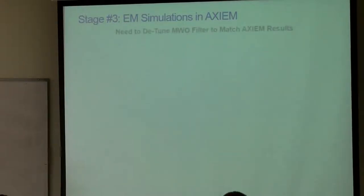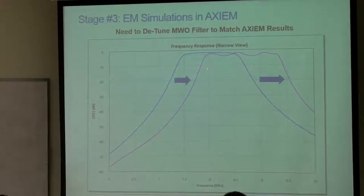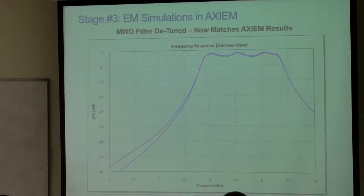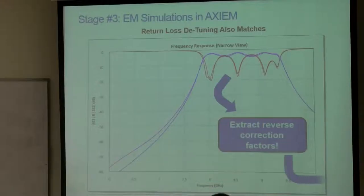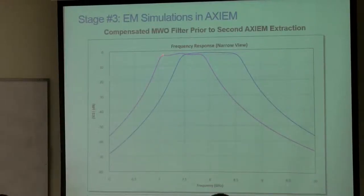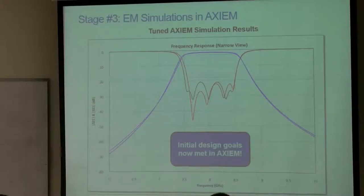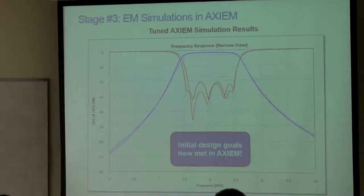Here's what the reverse correction method looks like graphically. I show Microwave Office and the bad Axiom EM result, intentionally match them up by messing with dimensions, and confirm the return loss also matches up. I come up with the reverse correction factors from that adjustment, apply them to my filter pre-distorting it — shifting it lower — anticipating that the EM simulation will shift it back up again. And sure enough, when I simulate the pre-distorted filter in Axiom, I now meet my goals in the electromagnetic simulator.